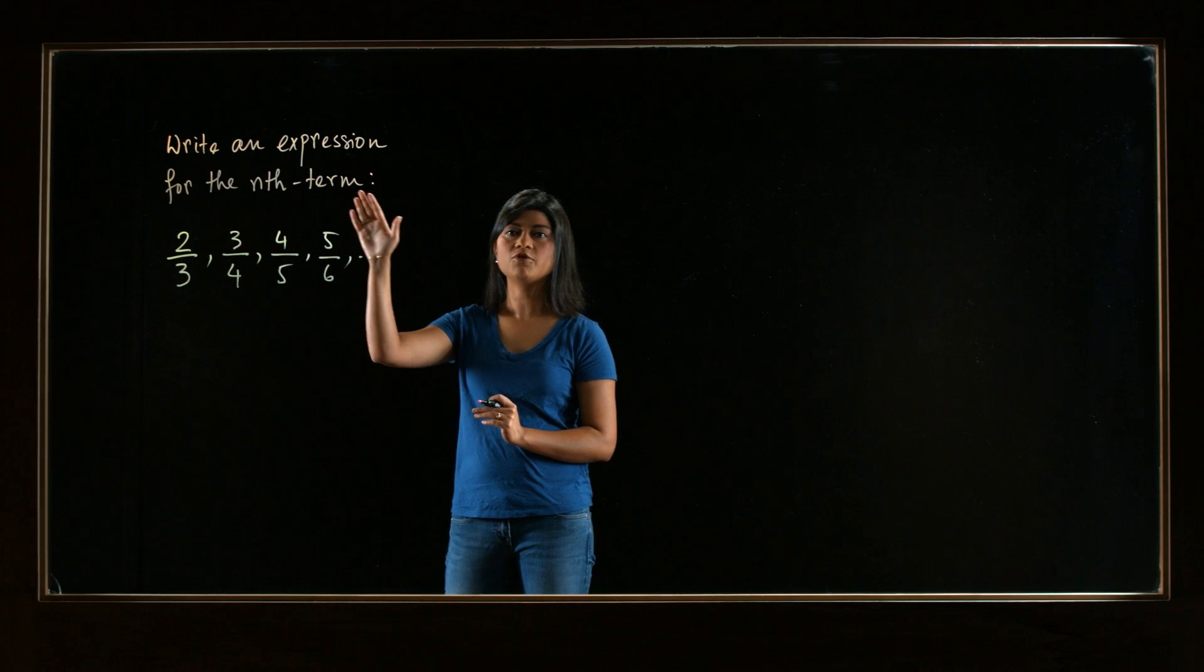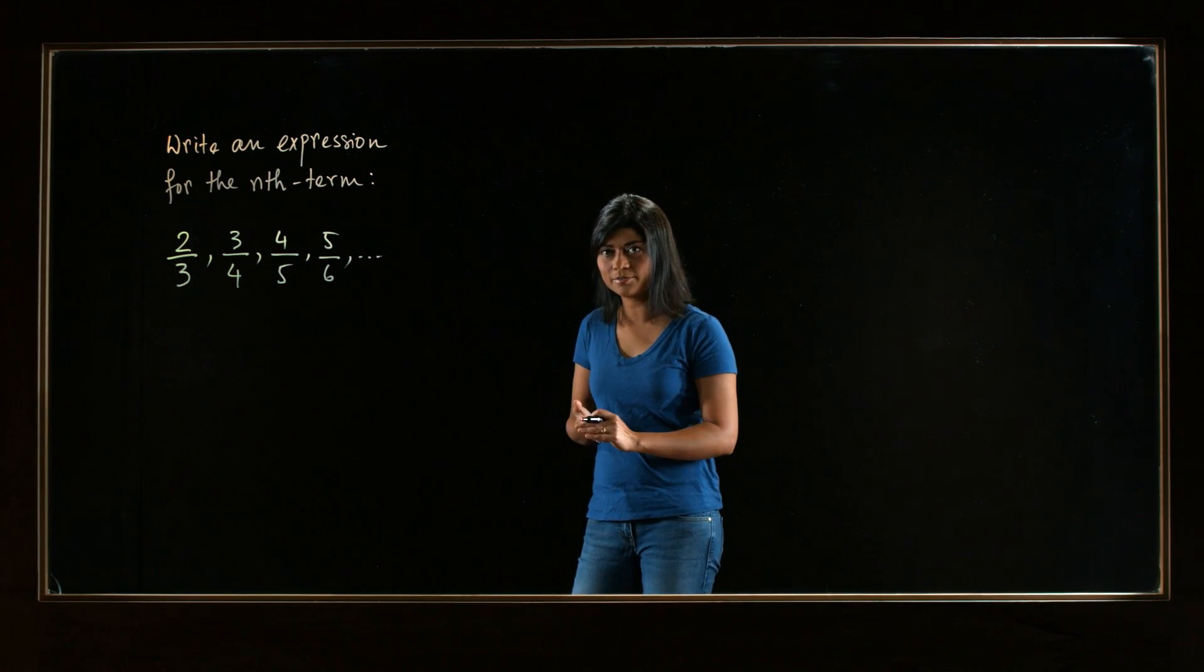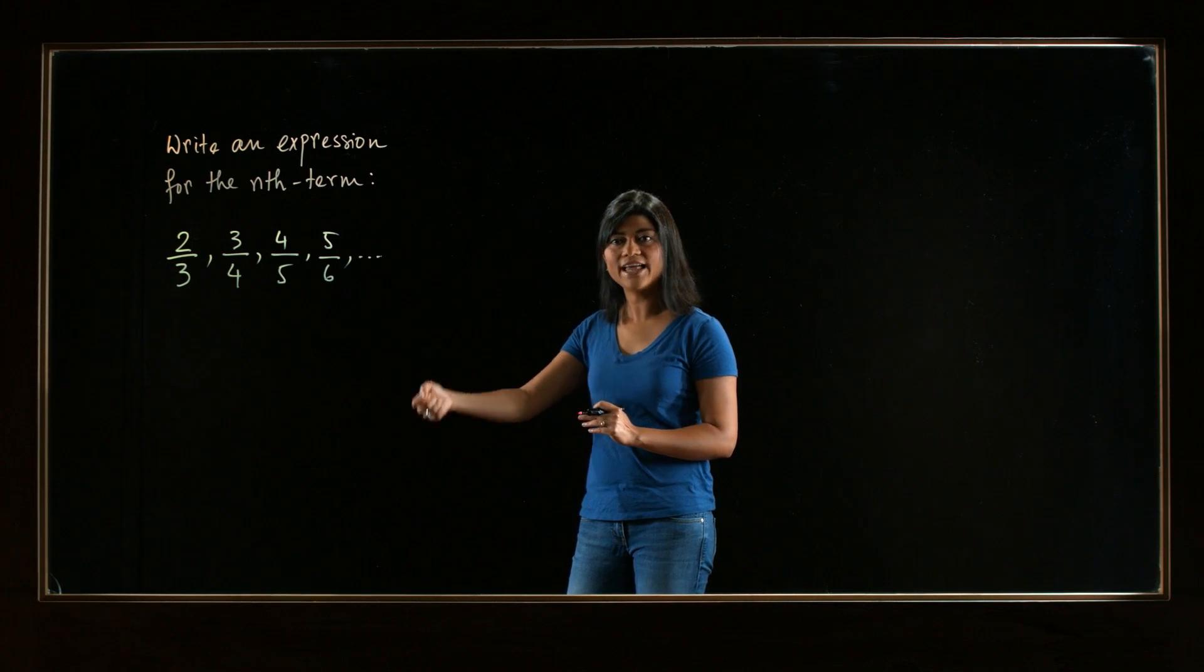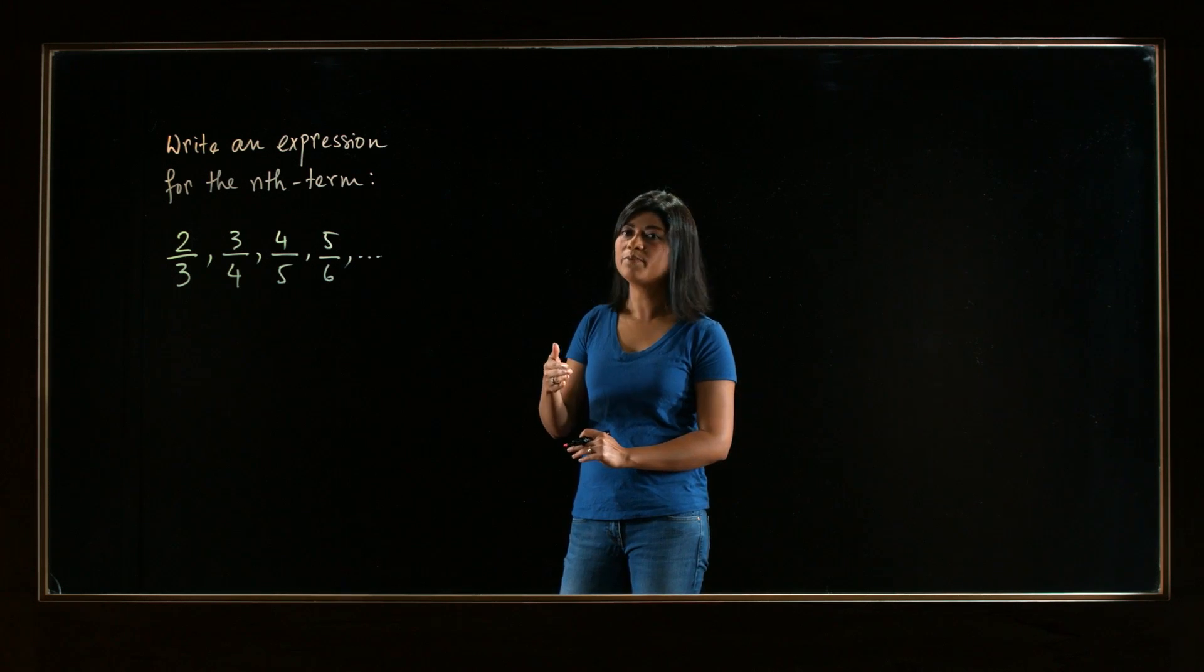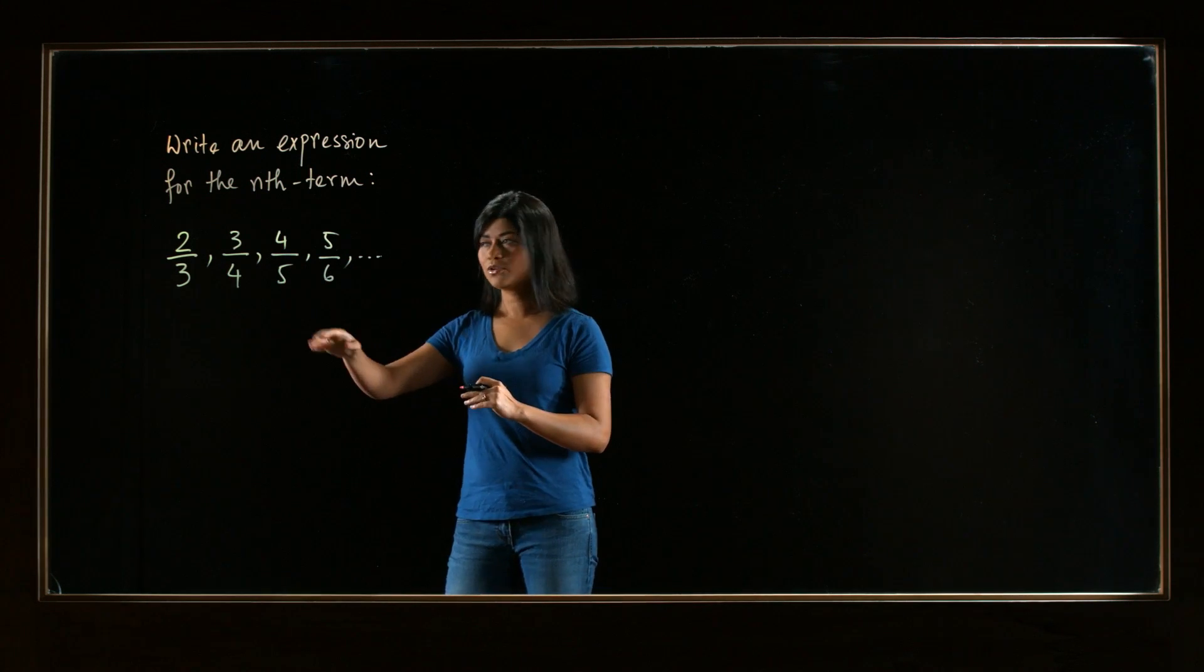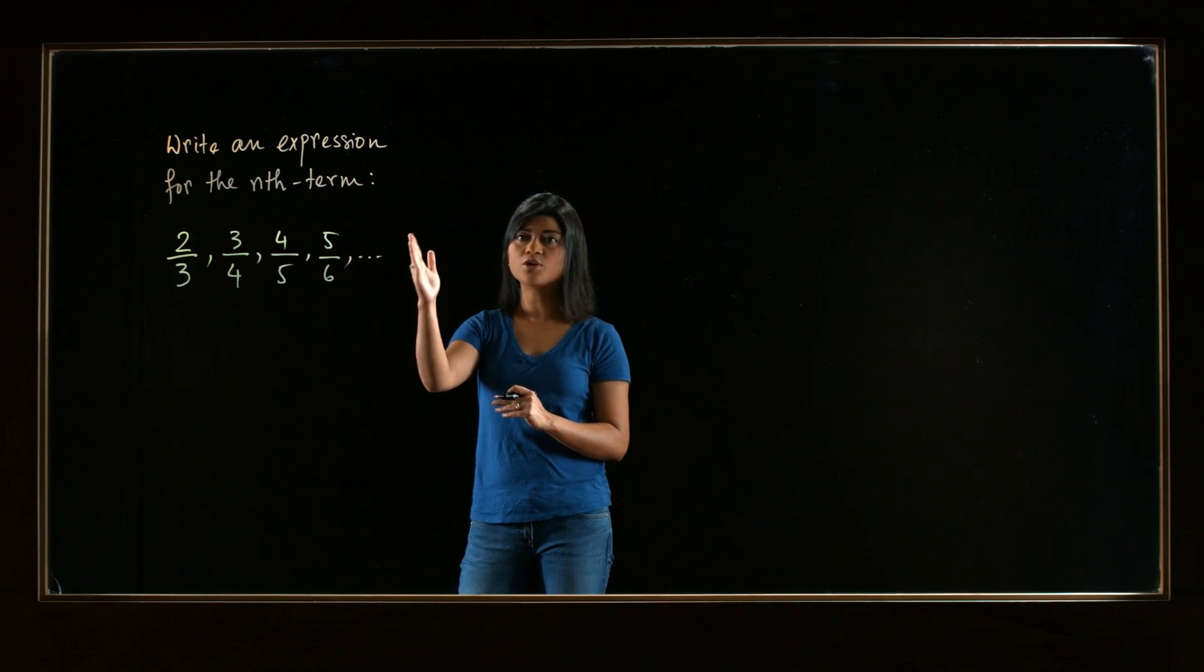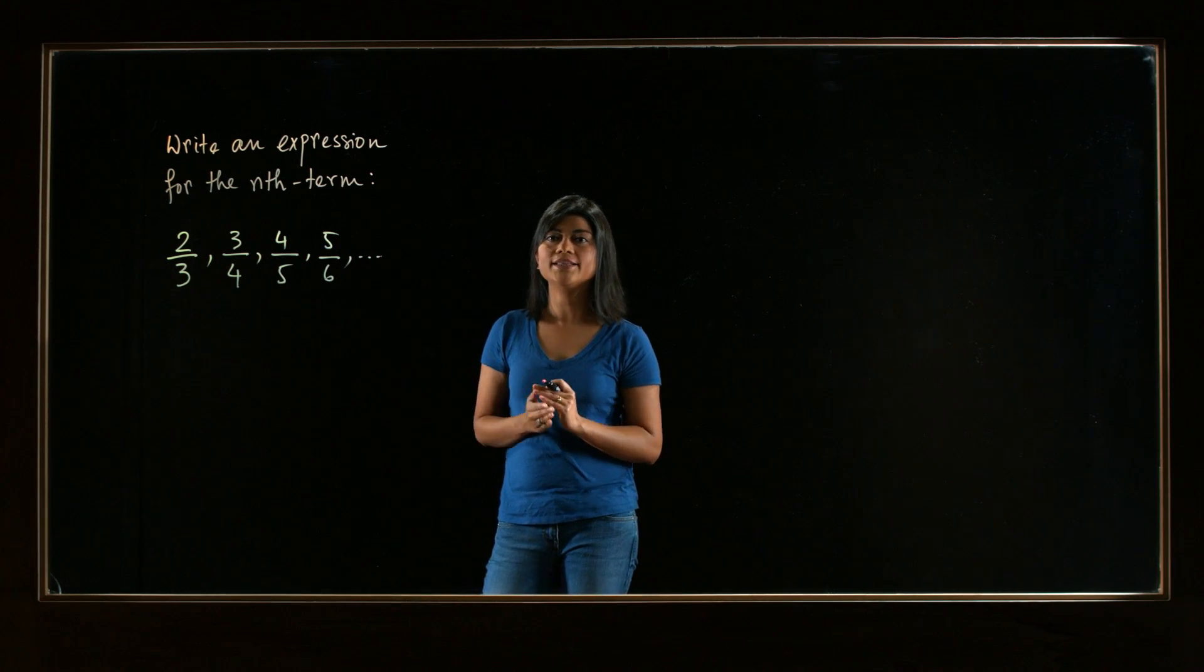We have to write an expression for the nth term. And you know that when we have the nth term, we can plug in various n values to get any particular term of the sequence. And here, we have the problem the other way around. Only the first four terms are given to us. We have to figure out what is that general nth term.